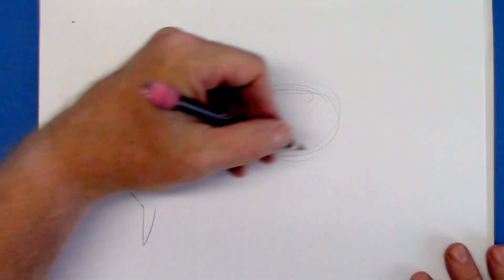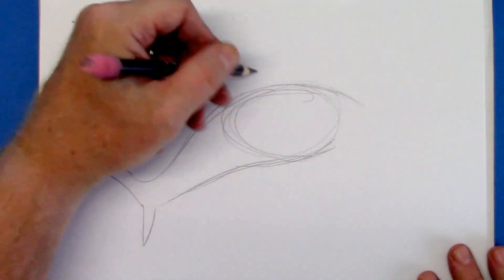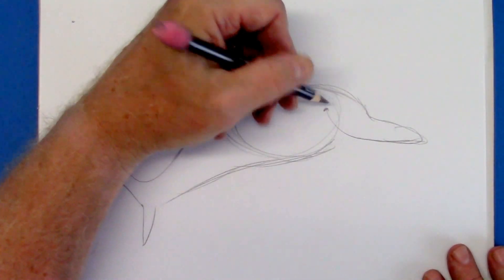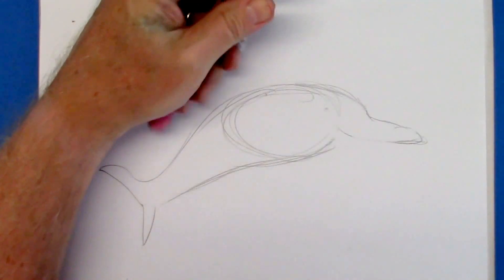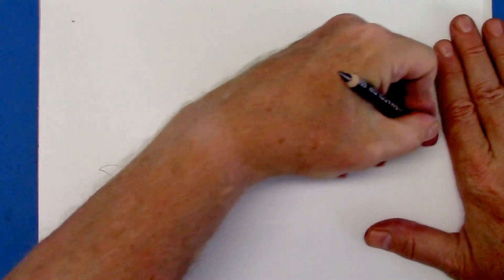First we start off with an oval, or main part of the body, and then we go into dolphin's forehead. He's got a real pronounced forehead, like so.